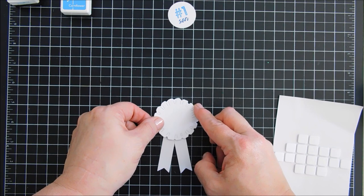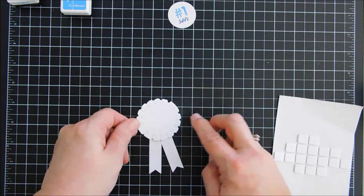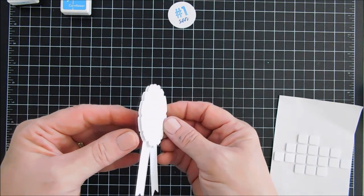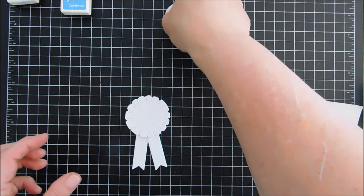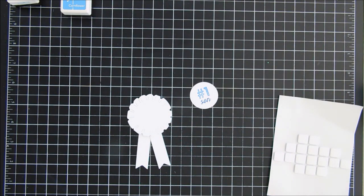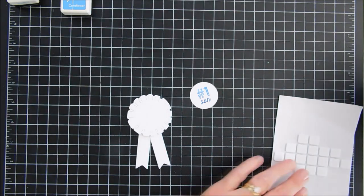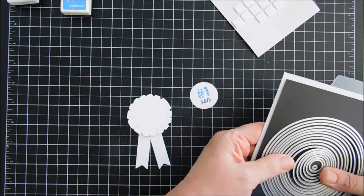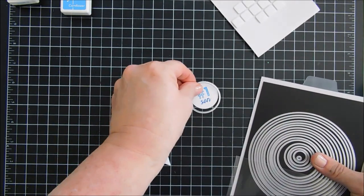Once we have this done, we're going to go ahead and add our Number One Son. Now I thought it was just a little too white, so I'm going to bring in my Infinity Circle dies and find a die that's slightly larger than my Number One Son circle.